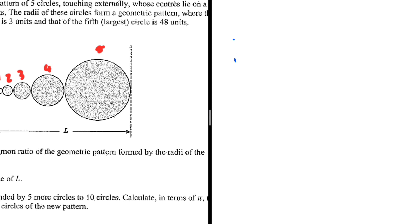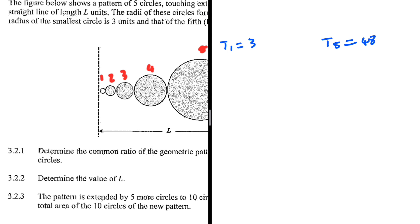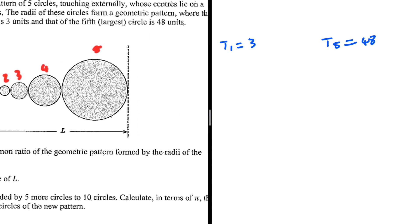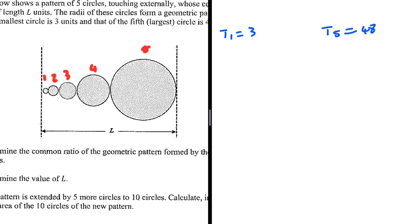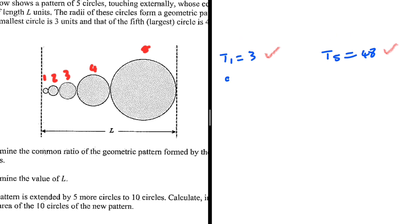Taking the radii as our terms, t1 equals 3 and t5 equals 48. We are looking for the common ratio of the geometric pattern formed by the radii. We know a equals t1, so a equals 3. And t5 equals a·r to the power 4, which equals 48.